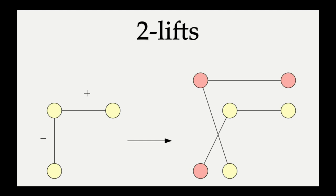So just to illustrate another example of a 2-lift, consider the graph which is a length 2 path, and one of the edges is labeled with a minus, the other is labeled with a plus. Now, if we do the minus lift on the vertical edge and the plus lift on the horizontal edge, you end up with the graph on the right.